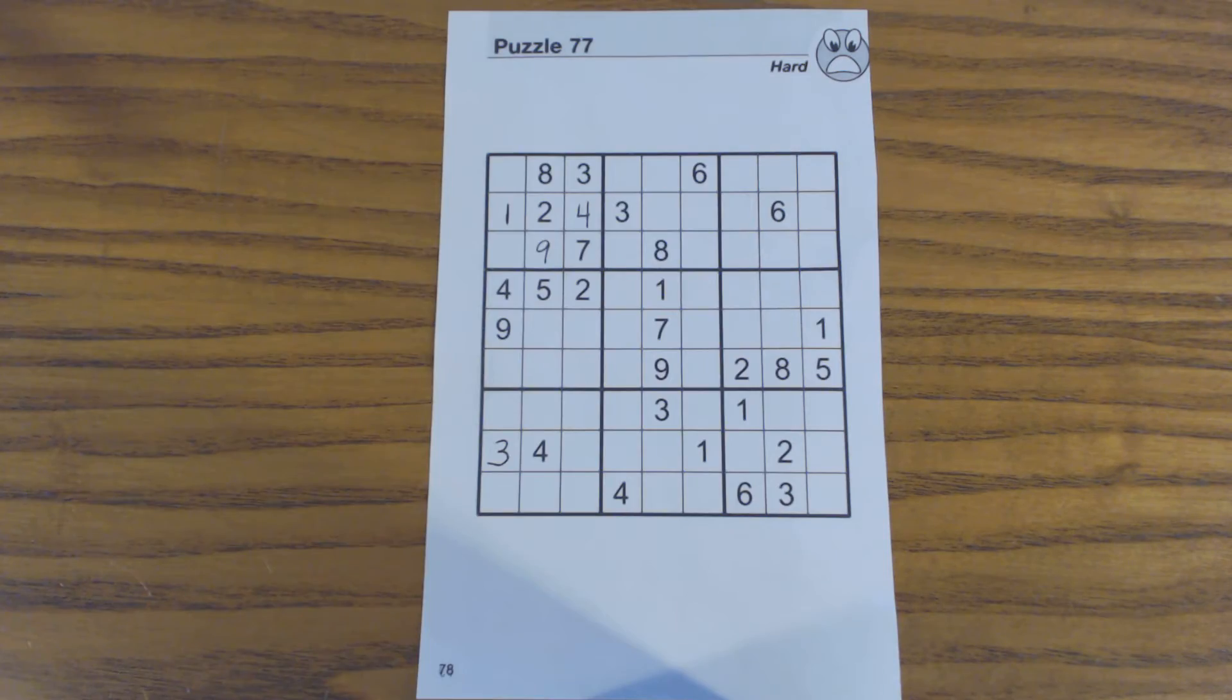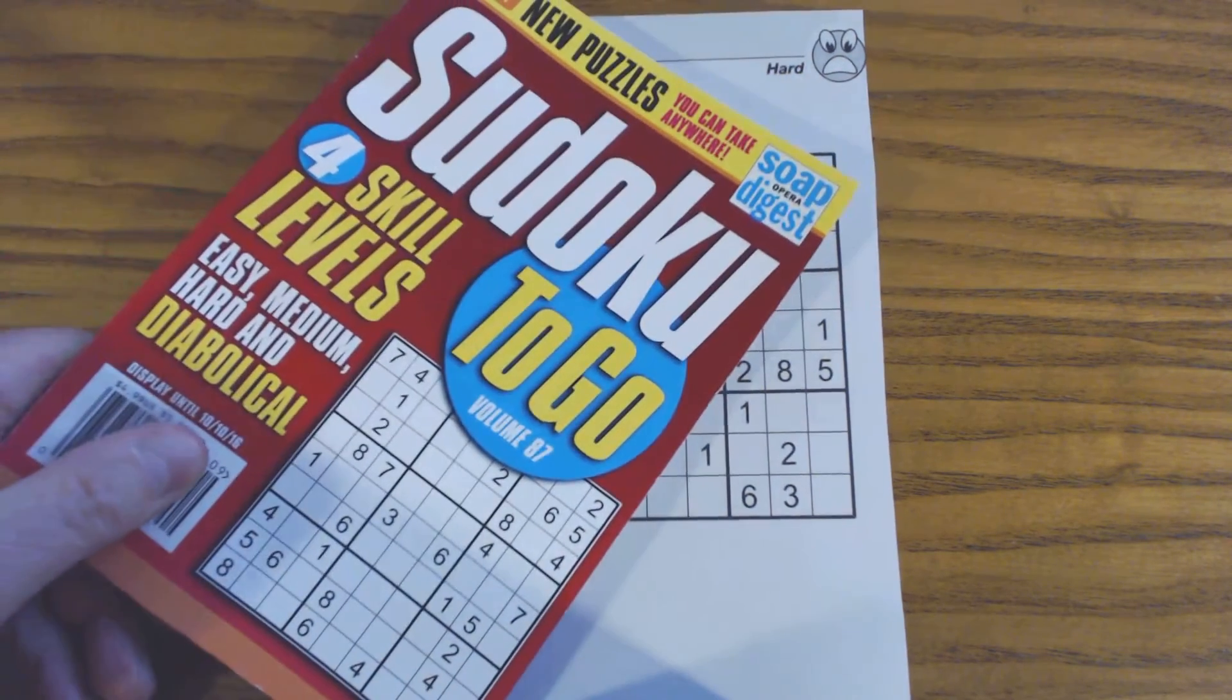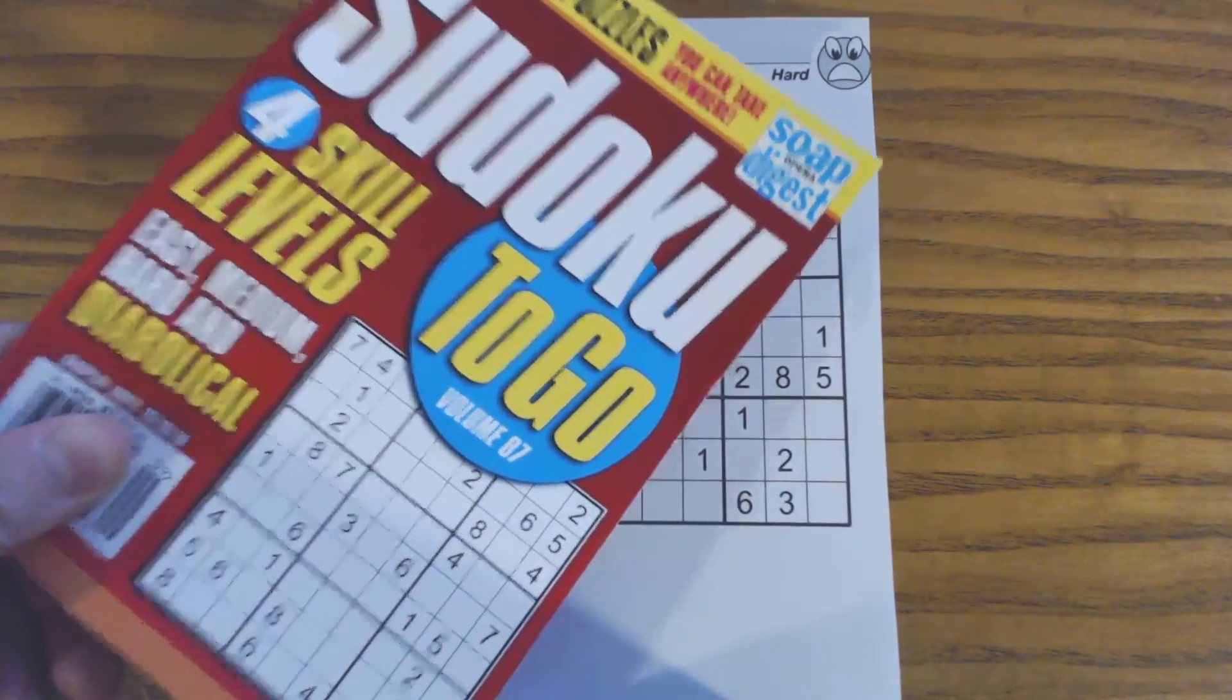This is puzzle number 77 in Sudoku to go volume 87 by Soap Opera Digest.